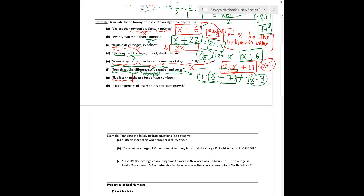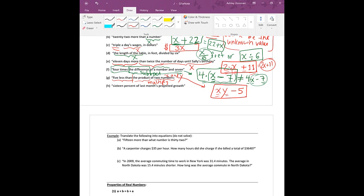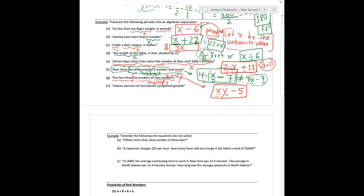Five less than the product of two numbers. Five less than something is that something minus five. Product means multiply — that's another tricky word. The product of two numbers: both numbers are things I don't know. I'll call one x and the other y. So the product is xy, and five less than that is xy minus 5. These are probably as complicated as they get — if you can do these, you'll be fine.